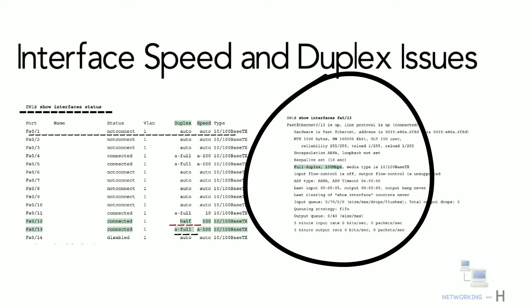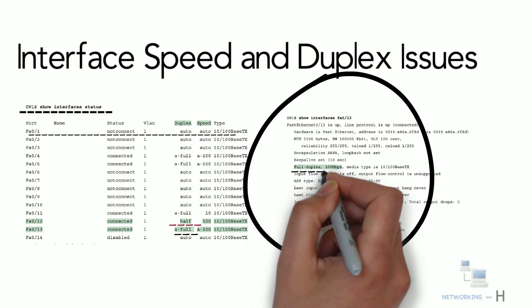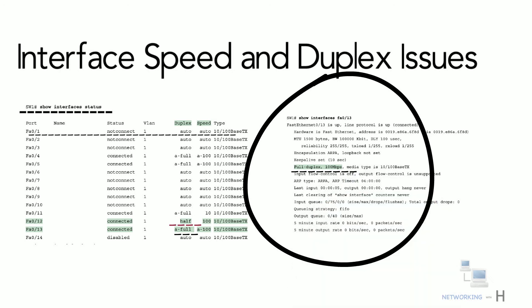For example, consider ports fa0/12 and fa0/13 in the output of the show interface status command. For fa0/13, 'a-full' means full duplex as auto-negotiated, whereas 'half' on fa0/12 means half duplex but manually configured. This implies that fa0/12's speed and duplex were not found through auto-negotiation, but fa0/13 did use auto-negotiation. Note that show interface fa0/13 without the status option simply lists speed and duplex with nothing implying auto-negotiation.